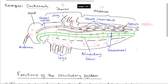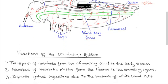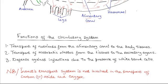The circulatory system in the cockroach and arthropods in general has three specific functions. One is the transport of nutrients from the alimentary canal to the body tissues. Second is the transport of metabolic waste from the tissues to the excretory organs. And third, it provides defense against infections and protects the body against pathogens that may invade the body. This is brought about by the presence of white blood cells.